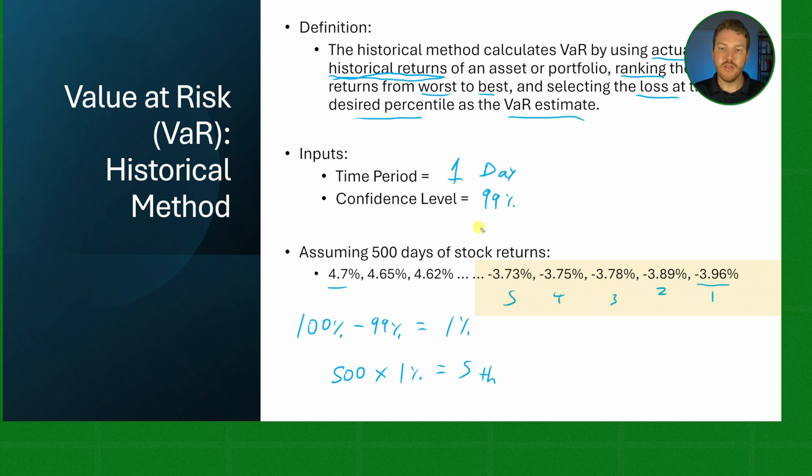And there we find that basically on any given day our 99th percentile worst outcome would be expected to be negative 3.73%, which is our VaR estimate.